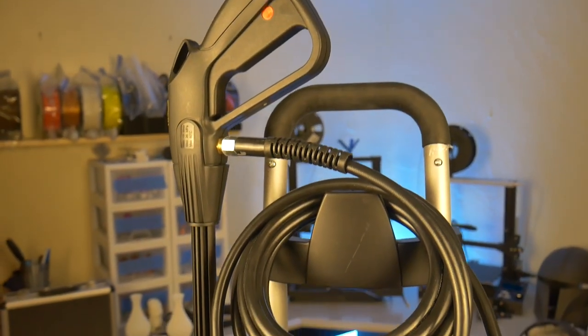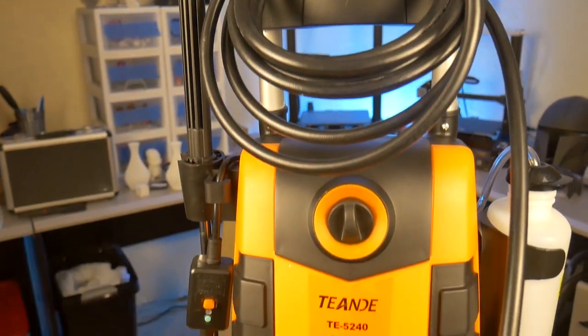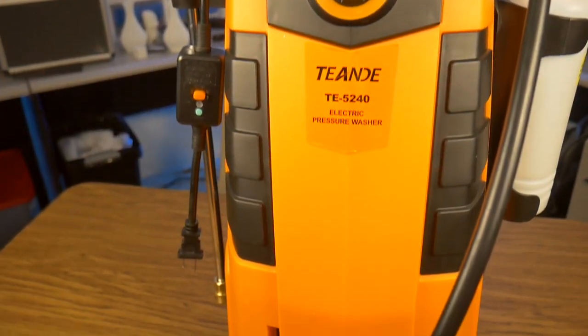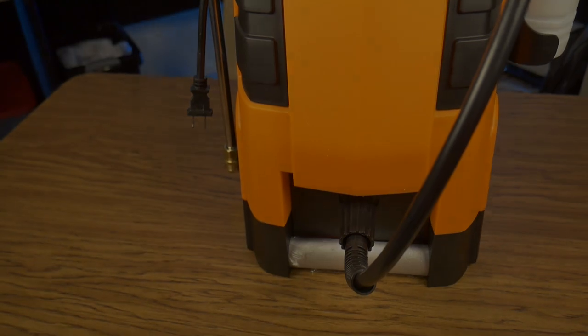In this case, I would expect to get somewhere between 1500 and 1800 PSI out of this unit, which given the size of the pressure washer, it's a pretty respectable number.